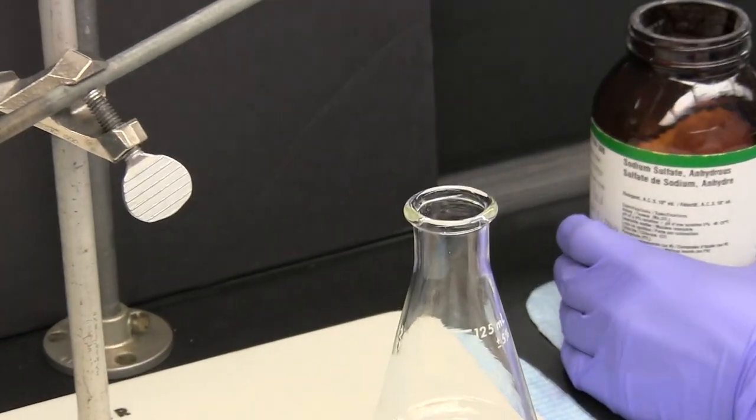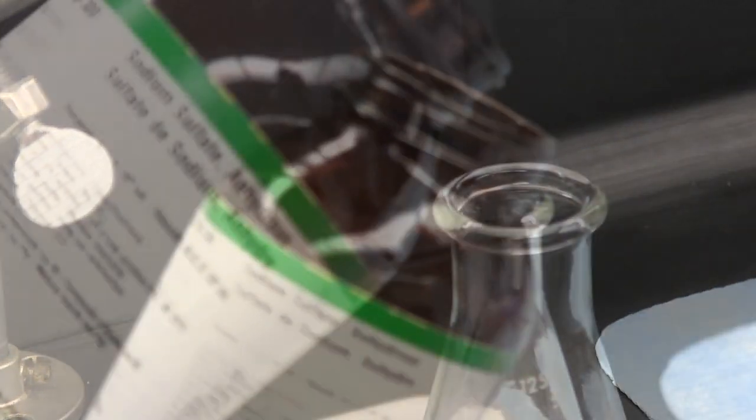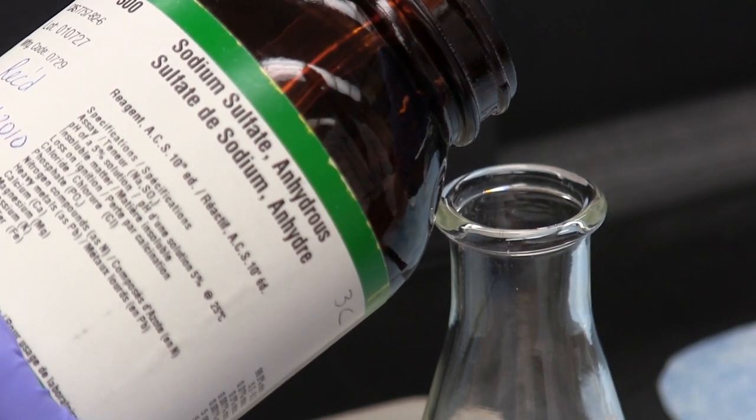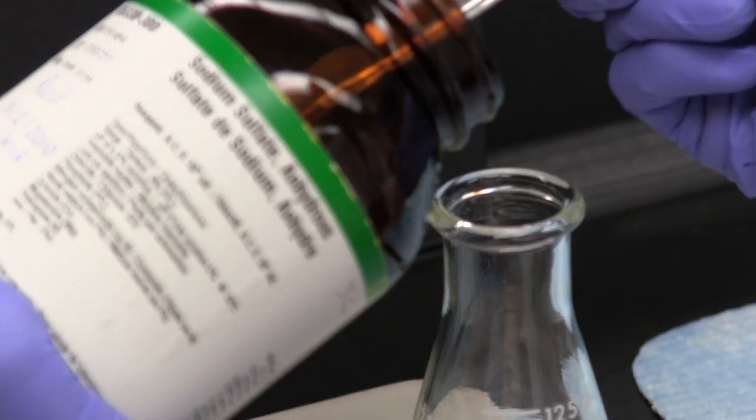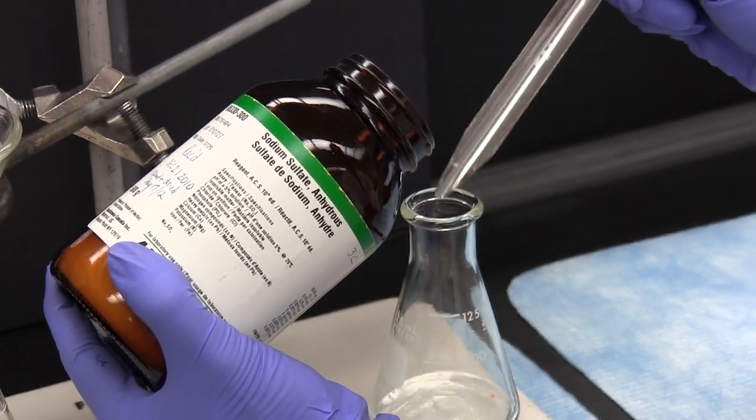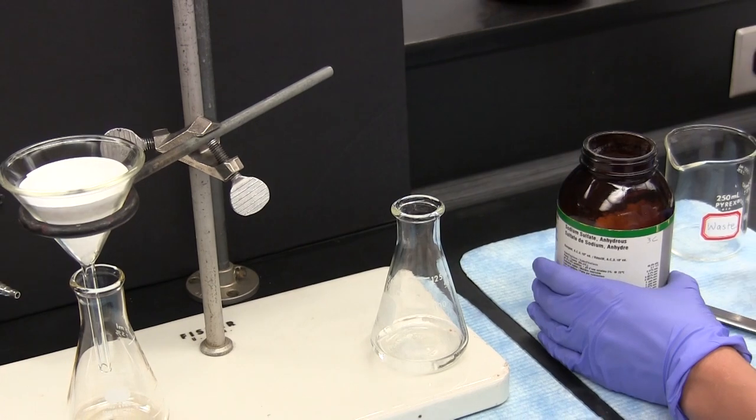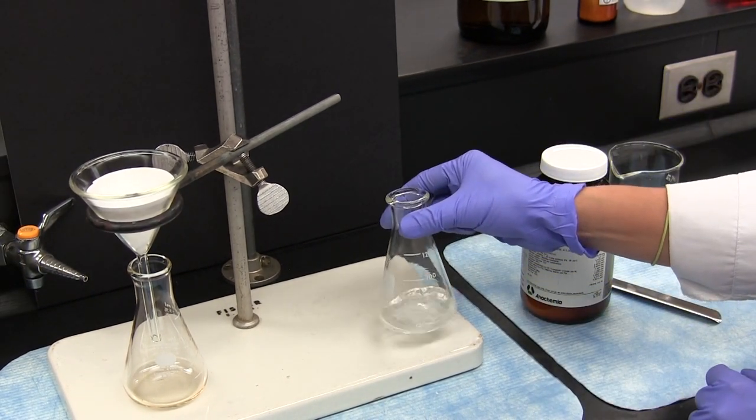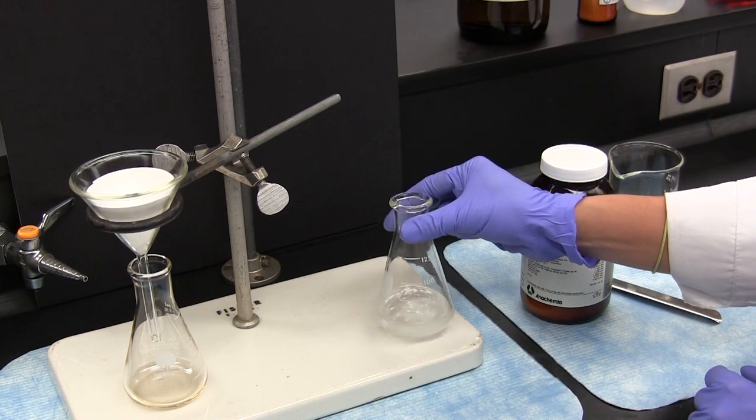Here we are going to dry the organic dichloromethane layer using anhydrous sodium sulphate and this will remove any traces of water. Other drying agents which could be used include calcium chloride and magnesium sulphate. Removal of small amounts of water is usually necessary after extraction from an aqueous solution. Follow whichever directions you are given.